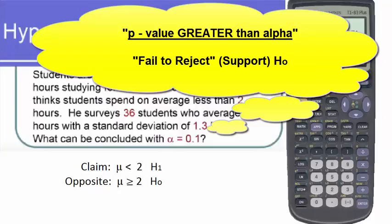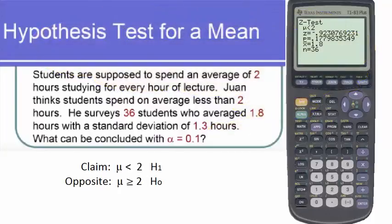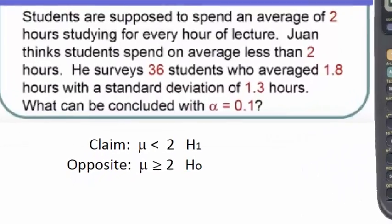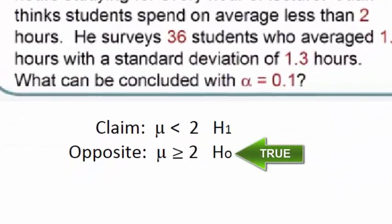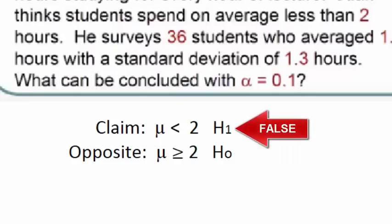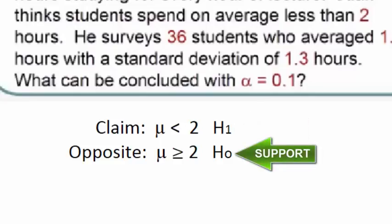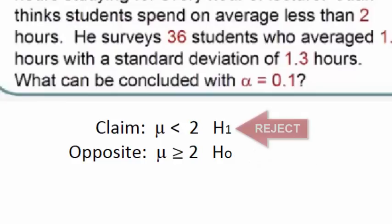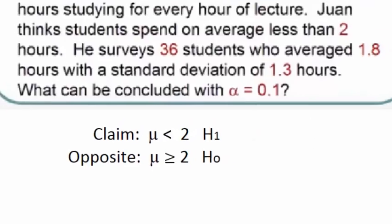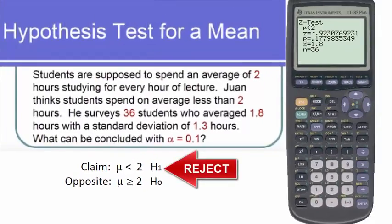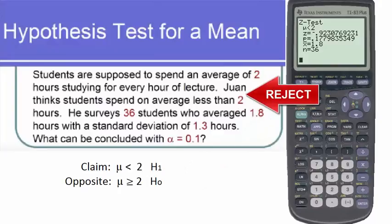So what does that mean in terms of Juan's claim? Well, that means that the null hypothesis was not rejected, and therefore, since if one of these statements is true, the other one must be false, so at a significance level of 10%, we would support the null, fail to reject if you like, which means we would reject the claim, which is the alternative hypothesis. So the conclusion of this problem would be that we would reject Juan's claim that students spend less than two hours studying for every hour of lecture.